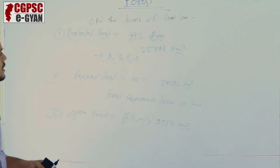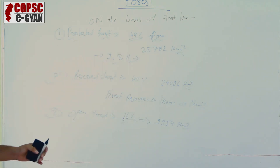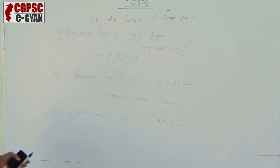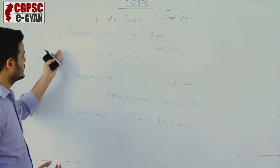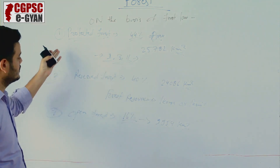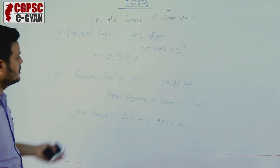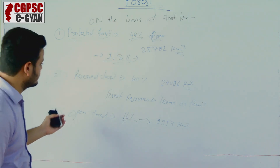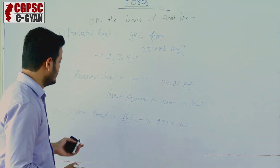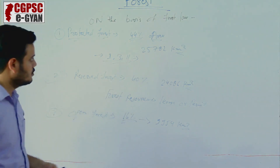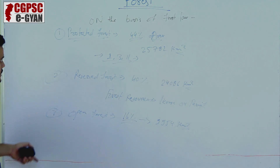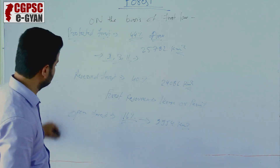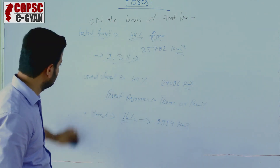So this was the classification on the basis of forest law. Forests are divided into three parts: protected forest (44%), reserve forest, and open forest. This is the second classification of the forest.